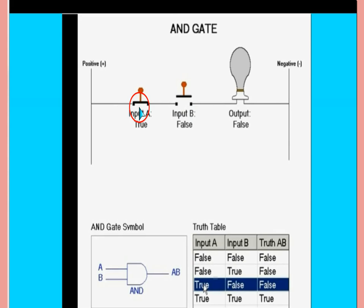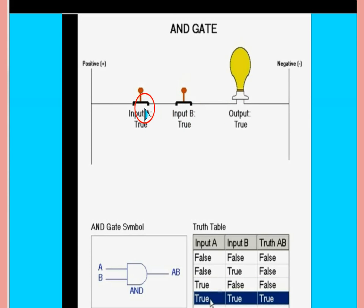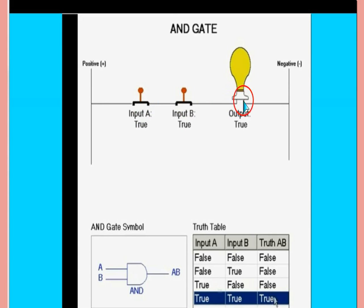Like one and zero — again the circuit is broken here, current cannot flow, this is off. When both switches are on, one and one, it lights up the bulb. One, one gives one. Current flows through this line, and one, one gives the one.